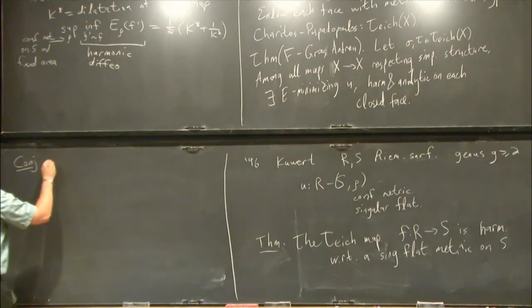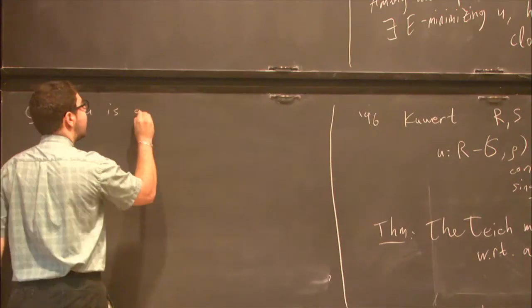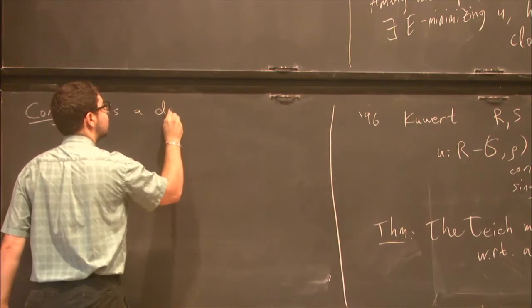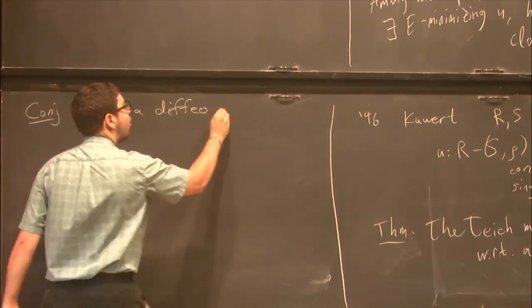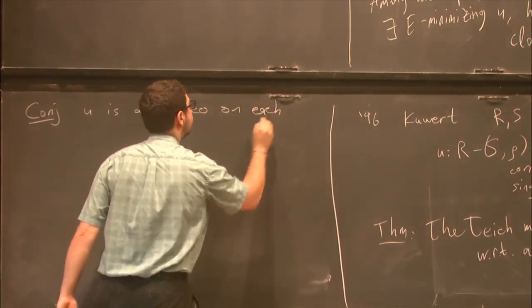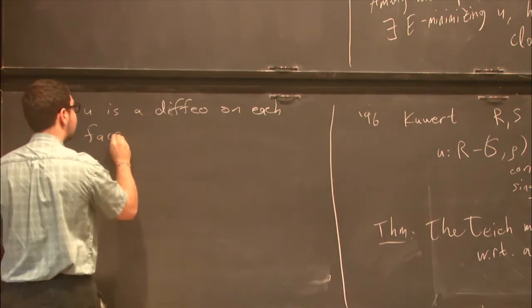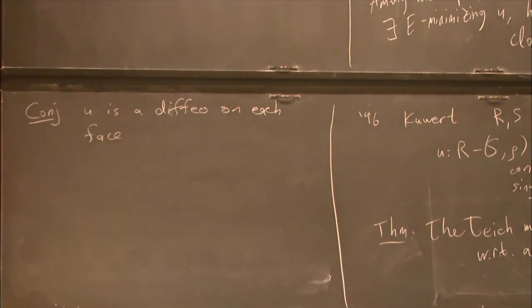But the other part of it, the conjecture that we have, is that u is a diffeomorphism on each face, so that at least the interior infimum in this statement will be realized by a particular map.